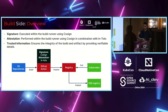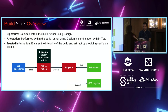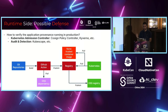At the end of the build side, we have a signature system running inside GitHub Actions, plus attestations adding more information about the build, providing trusted information to the end user or Kubernetes cluster. Now let's move to the runtime side.